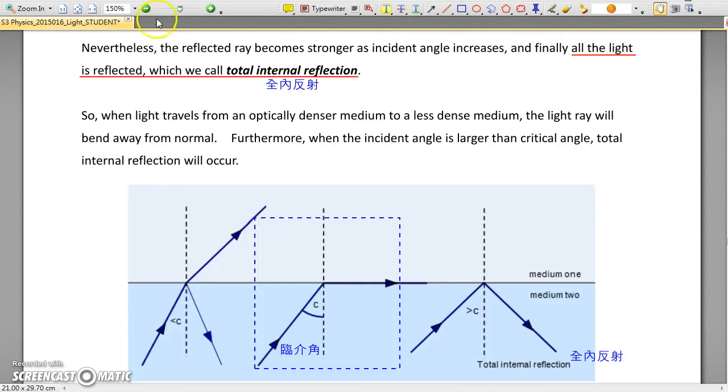You may also notice that the refracted ray becomes very bright, very strong. All the light is reflected, and so we call it Total Internal Reflection.